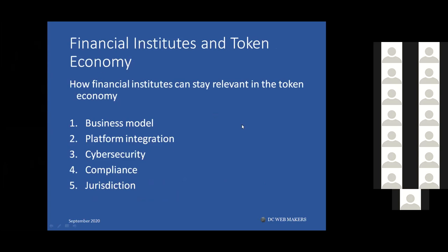Now let's discuss financial institutions and the token economy. We know about asset tokenization, its benefits, challenges, and value chain. The question is: how can financial institutions benefit from and implement asset tokenization? If you're working in a bank or financial institution and wondering what steps to include in your requirements document or business proposal, there are five elements to consider. We've done this work for banks.